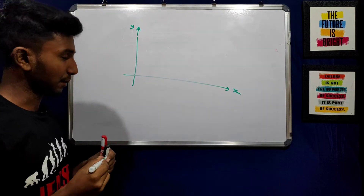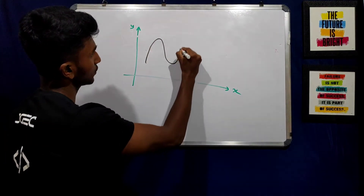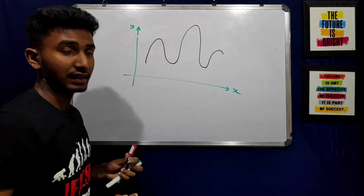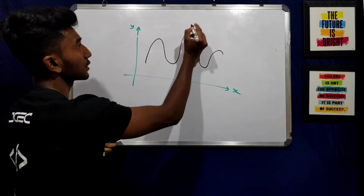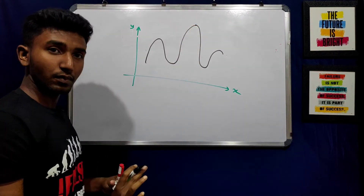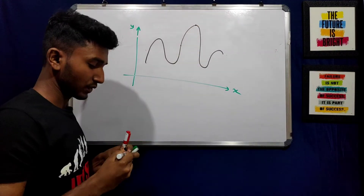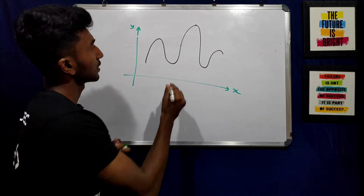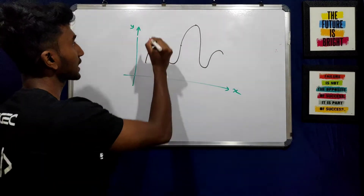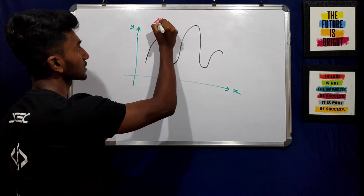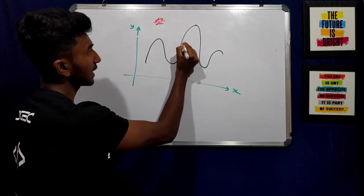Now consider a curve. We want to find the maximum or minimum of the curve. At a maximum point, there is a tangent line, and that line represents the derivative of the whole function — that is, dy/dx at that function of x equals zero.